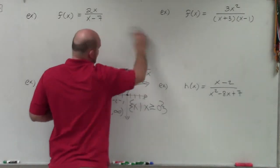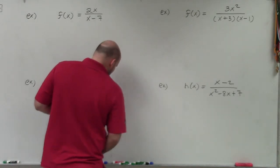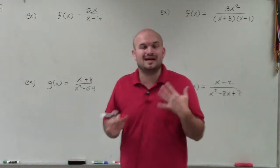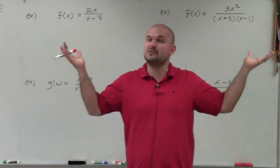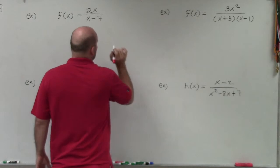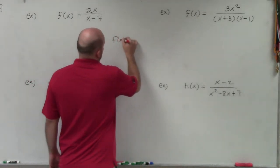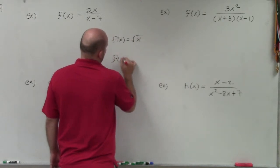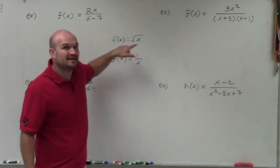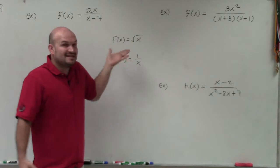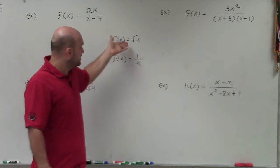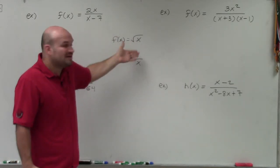When looking at rational functions, rather than identifying what is part of the domain, it's easier to identify what is not part of the domain. There are two common restrictions: f of x equals the square root of x, and f of x equals 1 over x. You cannot take the even root of a negative number, nor can you divide by 0. Any time the denominator equals 0, those values are not part of the domain.